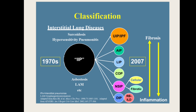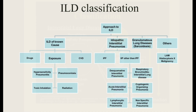As research progressed, the classification evolved. ILD of known cause includes drug exposure — amiodarone and nitrofurantoin are examples. Exposure to organic or inorganic dust causes inflammation in the interstitium: organic dust causes hypersensitivity pneumonitis, while inorganic dust causes pneumoconiosis. Toxic gas inhalation, radiation, and collagen vascular disease are also known causes of ILD.